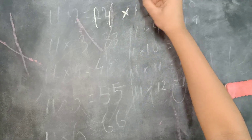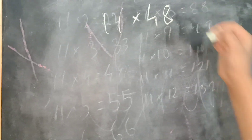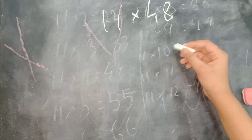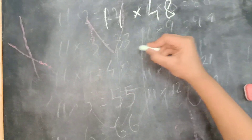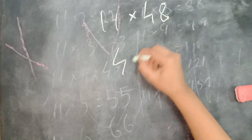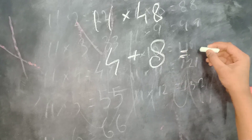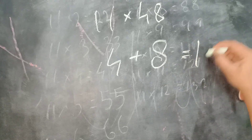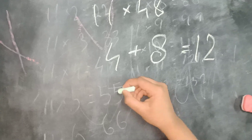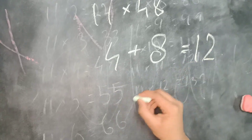11 times 48 — kind of hard, right? So what I'm going to do is separate the two digits: 4 plus 8 equals 12. Take the 12, keep the 2 in the middle.